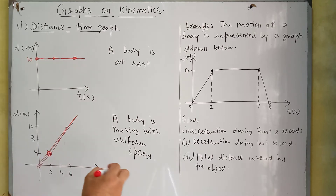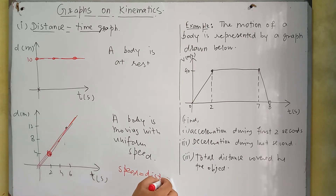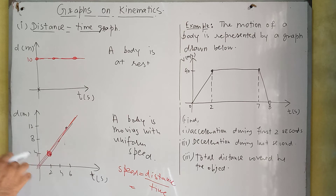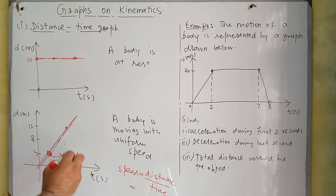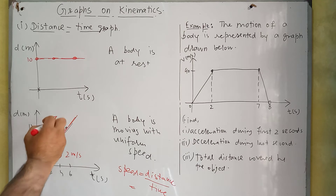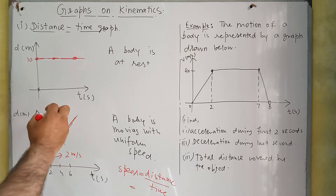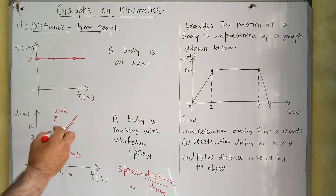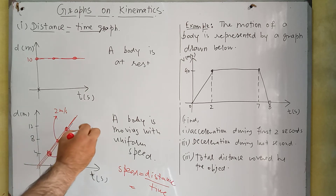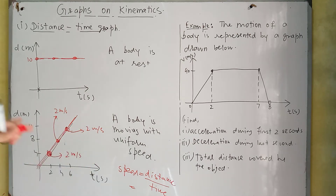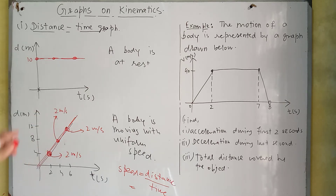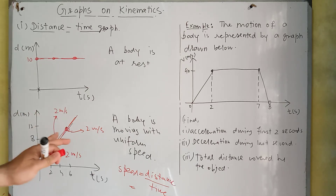Speed can be calculated by dividing distance by time. At this point the distance is 4 and time is 2, so 4 over 2 equals 2 meters per second. At this point distance is 8 and time is 4, so 8 over 4 equals 2 meters per second. Similarly at this point the speed is 12 over 6, which is 2 meters per second. At all three points the speed is 2 meters per second, confirming this is the graph of a body moving with uniform speed.